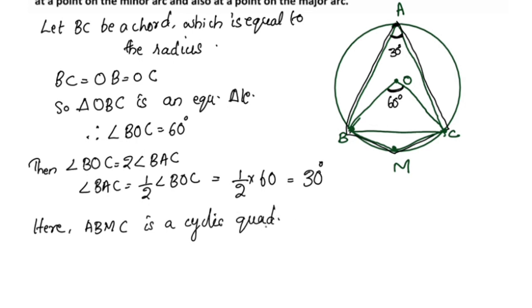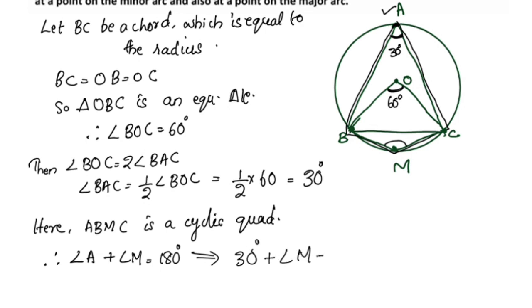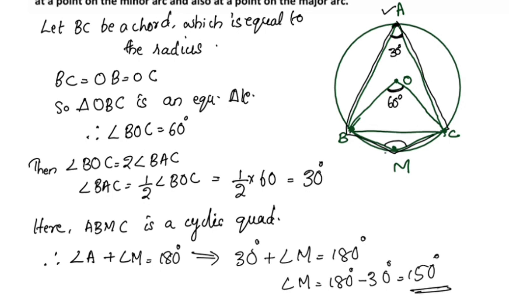The opposite angles of a cyclic quadrilateral sum to 180 degrees. Therefore angle A plus angle M is equal to 180 degrees. Angle A is equal to 30 degrees, so 30 degrees plus angle M equals 180 degrees, giving angle M equal to 150 degrees. Angle M is the minor arc subtended angle, equal to 150 degrees.